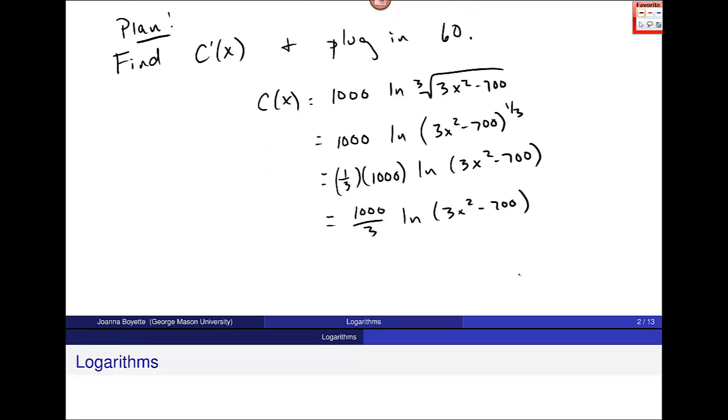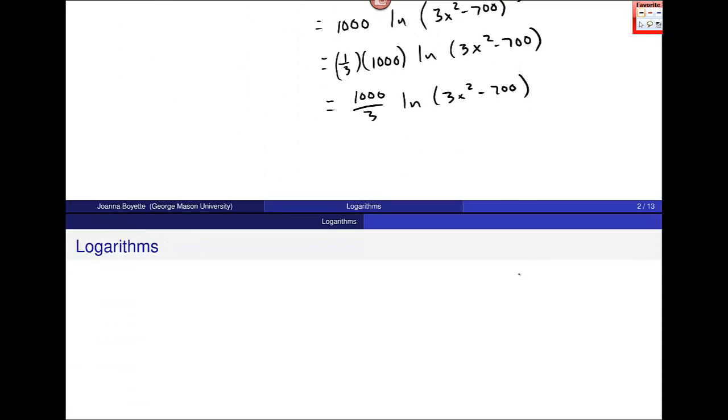So now I want to take the derivative of this piece. So C'(x) is equal to 1,000 over 3 sits out front. And then this derivative of a natural log is 1 over the inside, 3x squared minus 700, times the derivative of the inside, which should just be 6x.